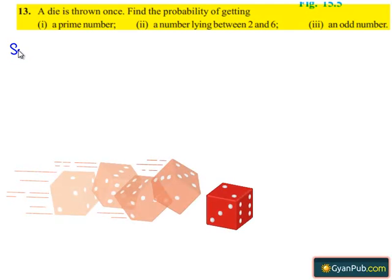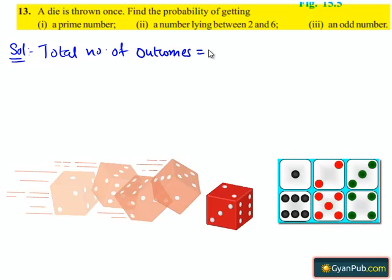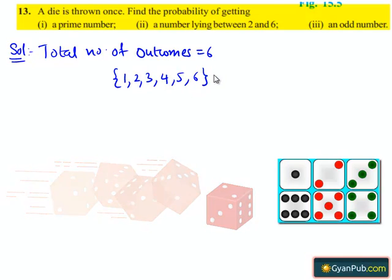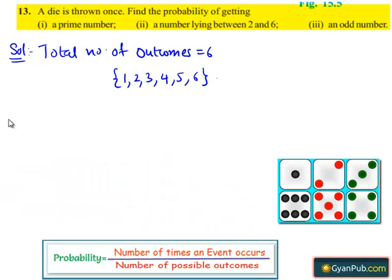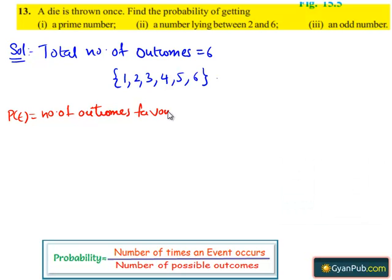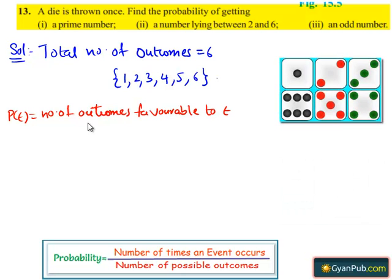Moving on to the solution. The total number of possible outcomes when the die is thrown equals 6, which are 1, 2, 3, 4, 5, and 6. We know that the probability of any event P(E) equals the number of outcomes favorable to event E divided by the total number of outcomes.